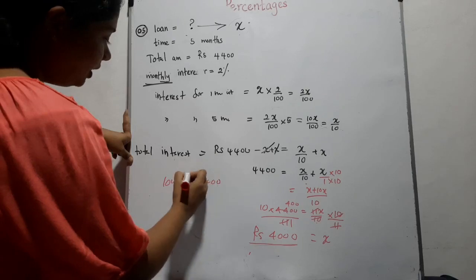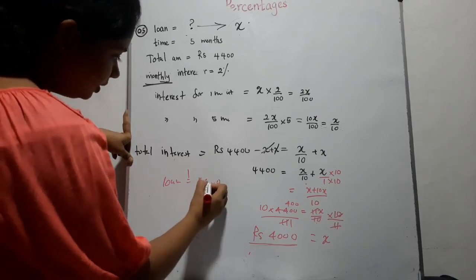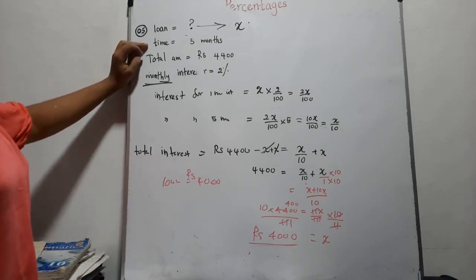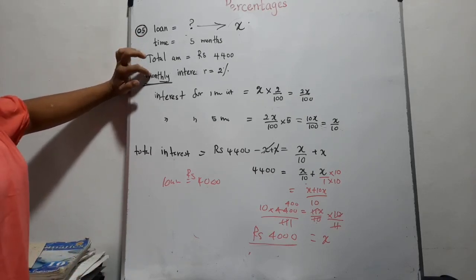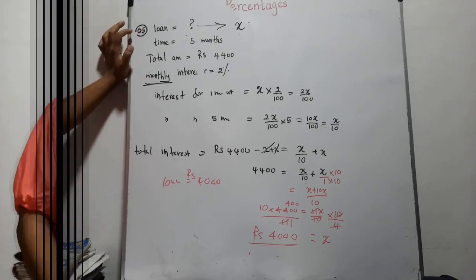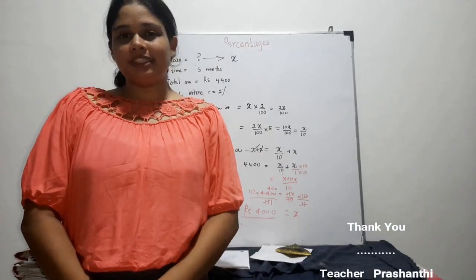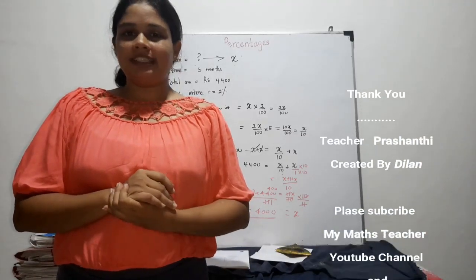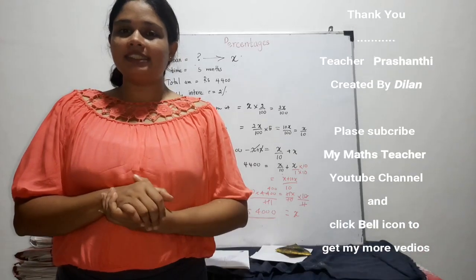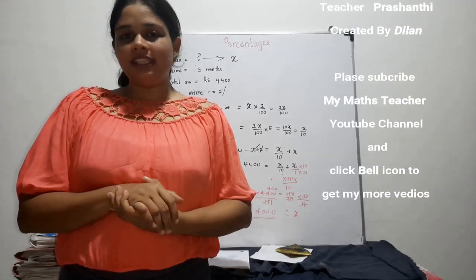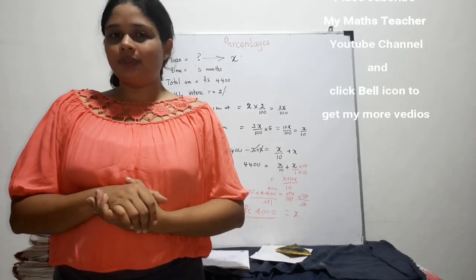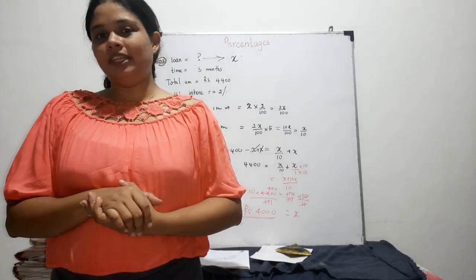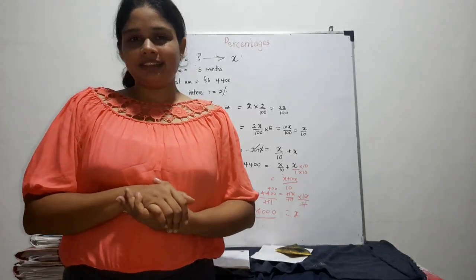Now you can find the loan amount when you are given the time duration, total amount, and interest rate. I have discussed 5 types of questions that you may be asked in the exam. This is not the end of the lesson on percentage — in the next video, I am going to discuss taxes. If this lesson was useful to you, please subscribe to the channel and click the bell icon to get more videos. Let's meet in another video. Goodbye.